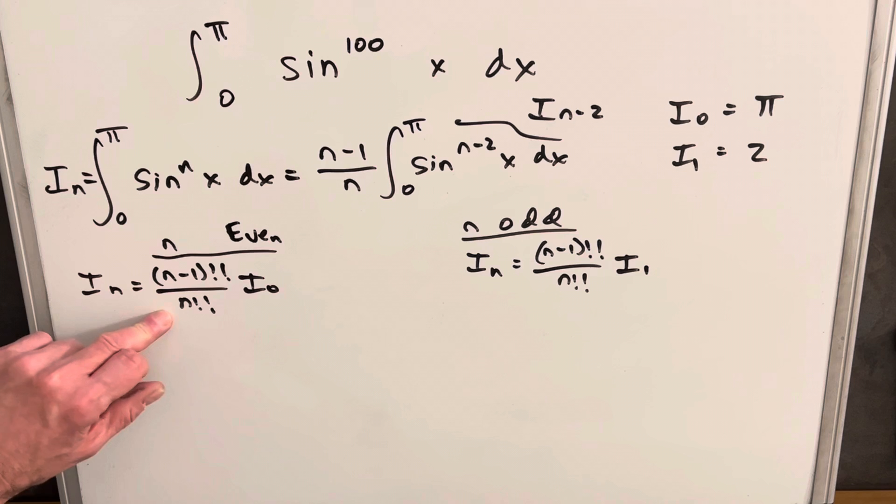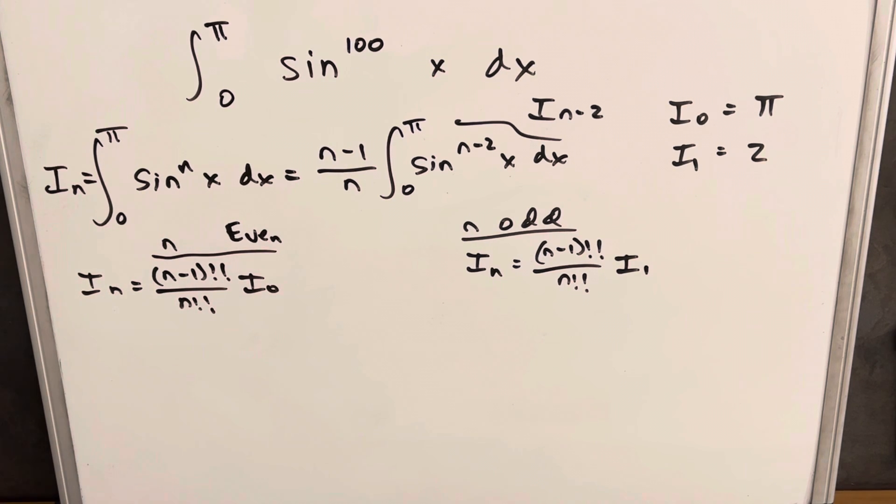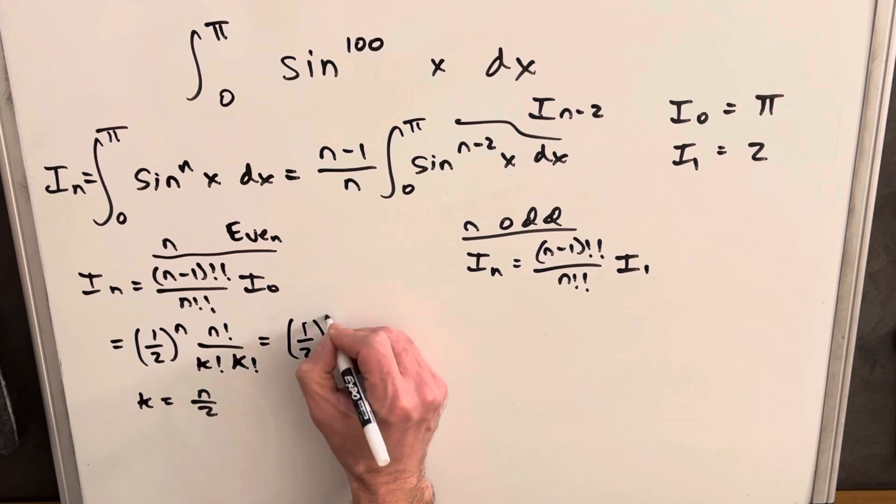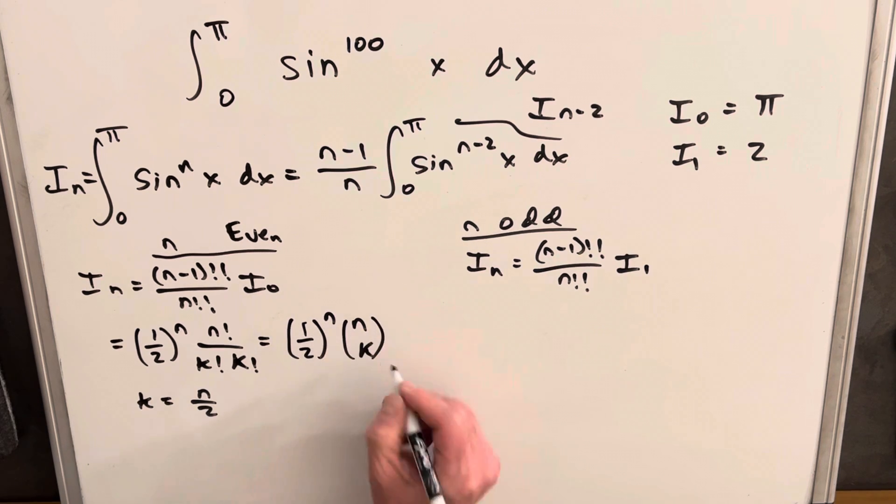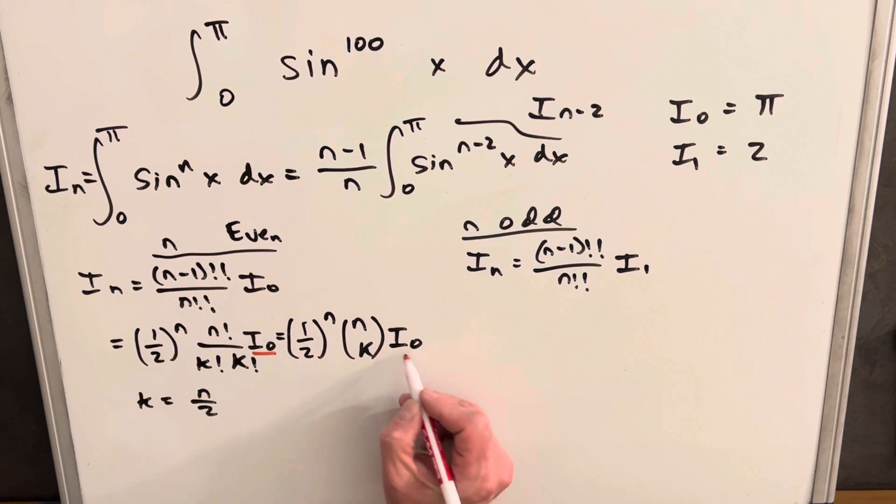And then you may want to see this, instead of representing this in double factorial, can we represent this a different way with factorials? Yes, we can. I have a previous video on how we come up with another form for this. So rather than go through all that now, because it takes a little time, what this formula is for this is going to be, for the even case, half to the n, n factorial over k factorial times k factorial. k is just going to be n divided by 2. We can also write this as half to the n, n choose k, or the binomial coefficient. I forgot the i sub 0 for a second, so I just added that back in.